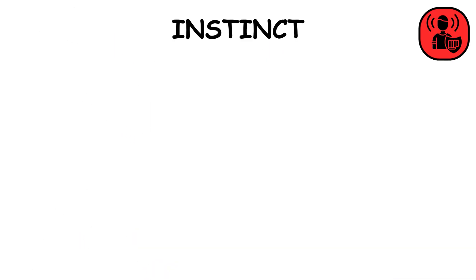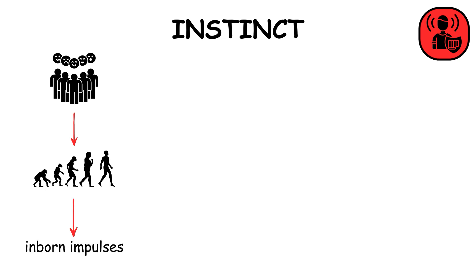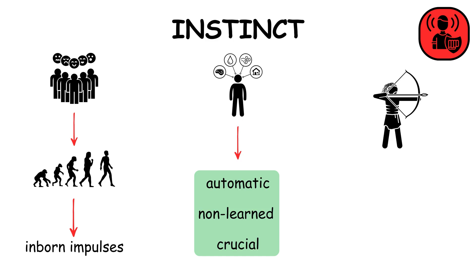Instinct drives basic human behavior. From early humans to now, it's our natural inborn impulses for survival, like seeking food and shelter. These are automatic, non-learned behaviors crucial for survival, seen in hunter-gatherer societies and still influencing us today.